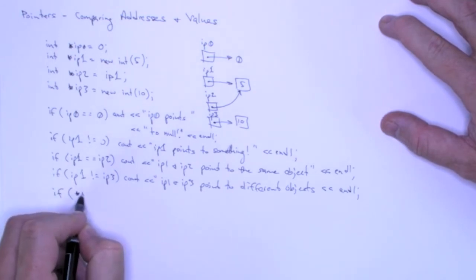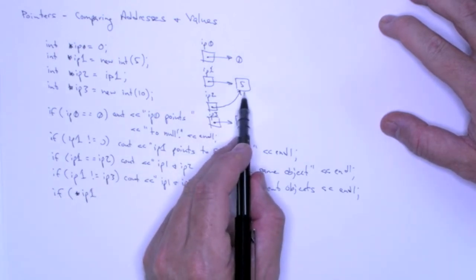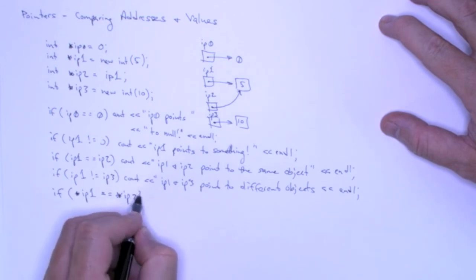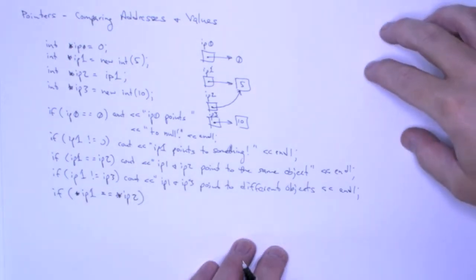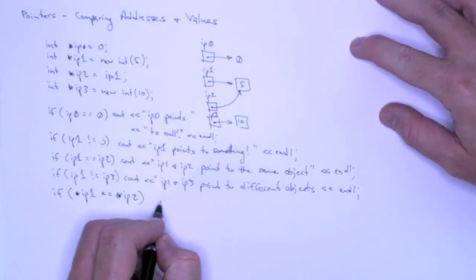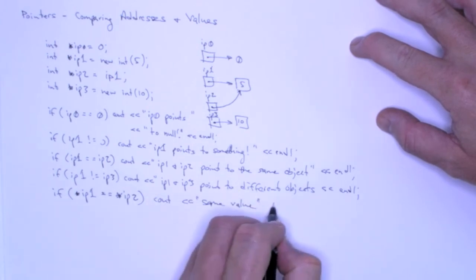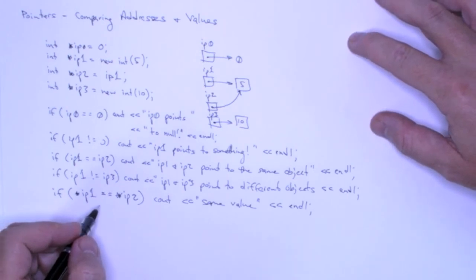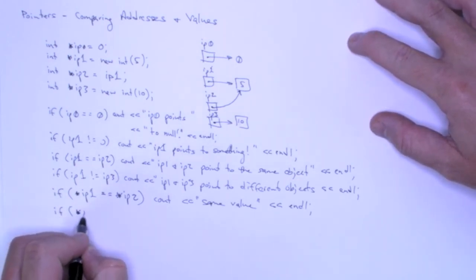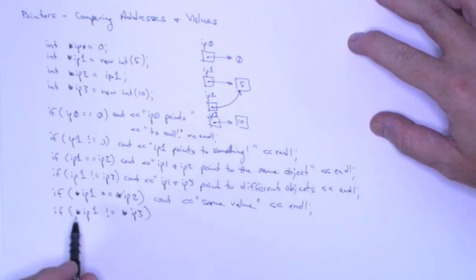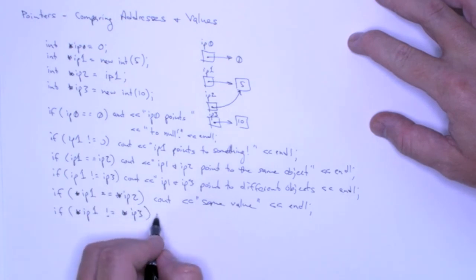So if I dereference IP1, that is going to evaluate to 5. And then if I dereference IP2, that also is going to evaluate to 5 by virtue of the fact that they point to the same 5. And so I can conclude that these have the same value. And then of course I can use inequality and I can say dereferenced IP1 is not equal to dereferenced IP3. And just so I'm precise here, dereferenced IP1 evaluates to 5, dereferenced IP3 evaluates to 10. This will be true so I can conclude that they are different values.